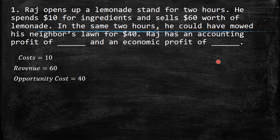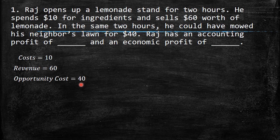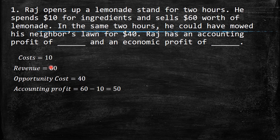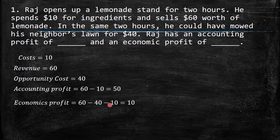The question asks: what is Rak's accounting profit and economic profit? Remember, accounting profit just takes into account the flows of money, while economic profit takes into account the opportunity cost — specifically the implicit cost. This $40 foregone is definitely an implicit cost; you don't need to pay it, but it affects your decision to open the lemonade stand. So accounting profit is 60 minus 10, which is 50. And economic profit is revenue minus explicit cost ($10) minus implicit cost ($40), giving us 10.